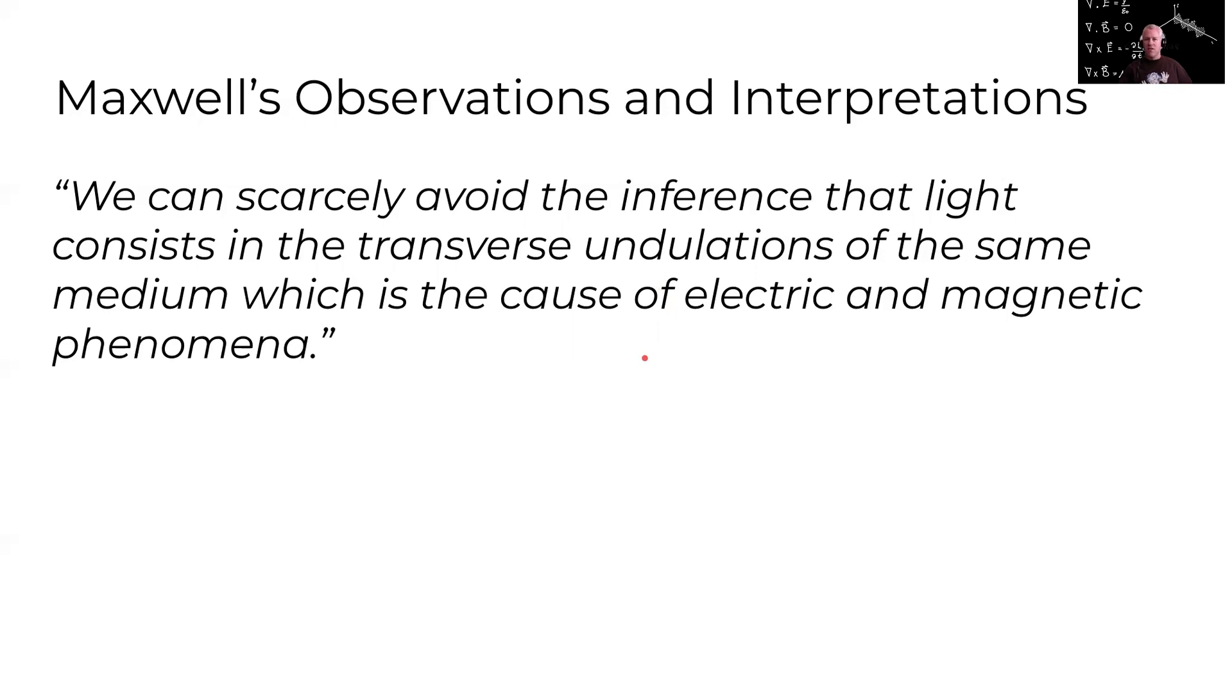Now just as an aside he actually mentions the idea of a medium and back then many people thought that light required a medium to propagate through the same way sand waves need some matter to actually vibrate through. We now know that light can travel through a vacuum but at the time we didn't know that but Maxwell was predicting that light was made by these oscillations of electric and magnetic fields.